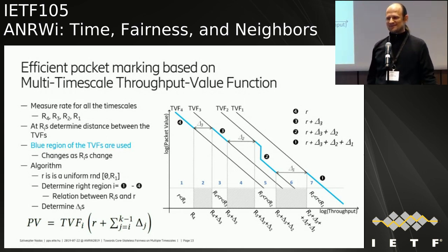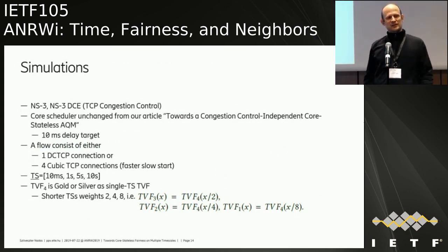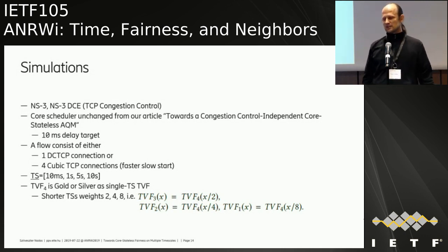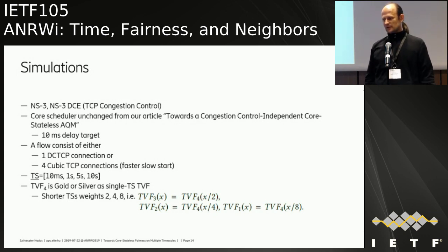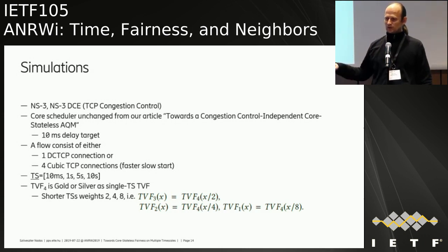We did simulations using NS3 and the same core scheduler as our previous work with a 10-second delay target. Flows consist of either a single DCTCP connection or four Cubic TCP connections (which causes slow start for Cubic). Timescales used were 0.1 second, 1 second, 5 seconds, and 10 seconds. TVF4 represents gold and silver in the single-timescale TVF, doubling the share at each timescale: twice at timescale one, four times at timescale five, eight times at timescale ten.